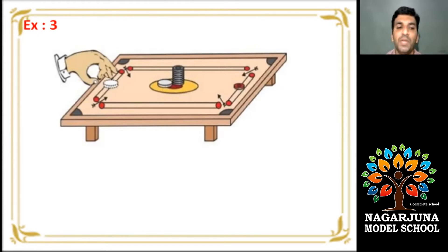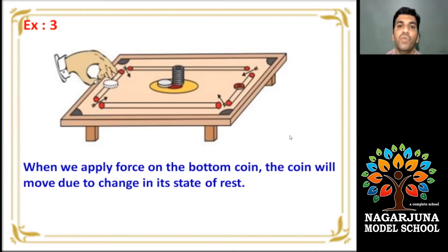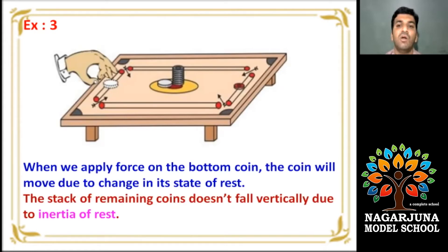Make a stack of carom coins on the board. Give a sharp hit. At the bottom of the coin, we can find that the bottom of the coins move away. The remaining settle down. When we apply force on the bottom coin, the coin will move due to change in its state of rest. The stack of remaining coins does not fall vertically due to inertia of rest.